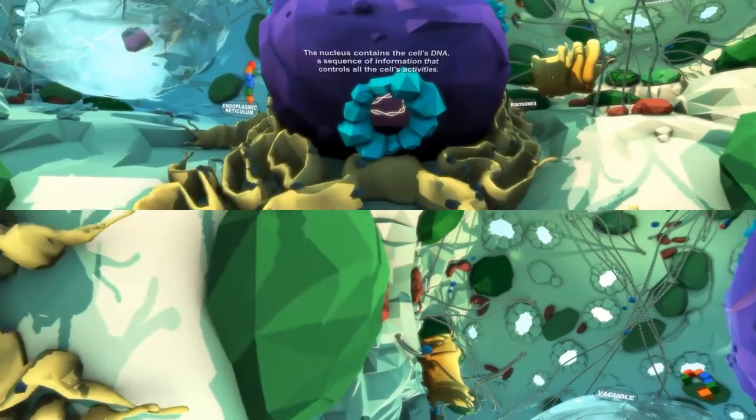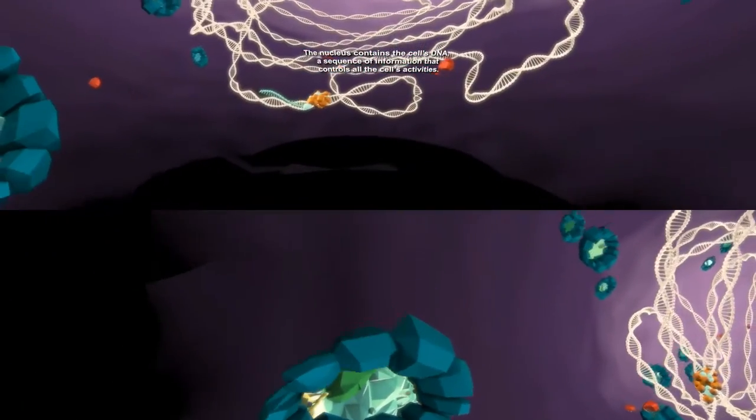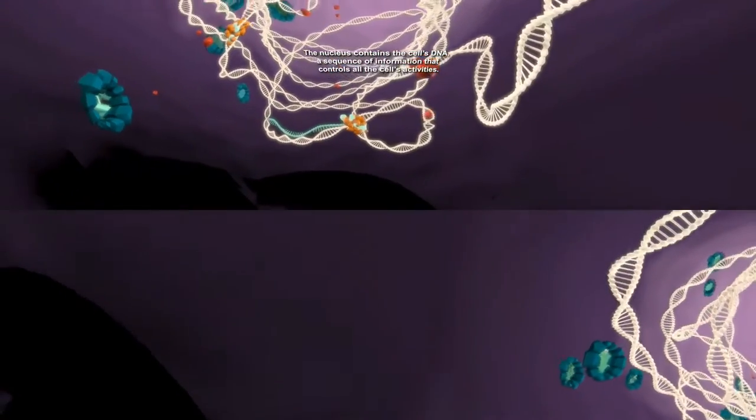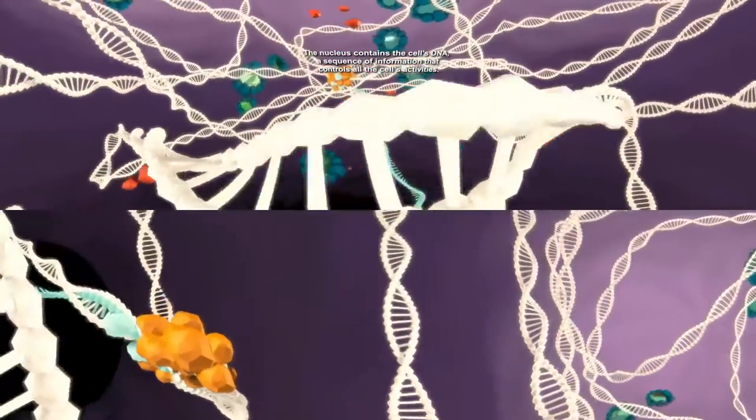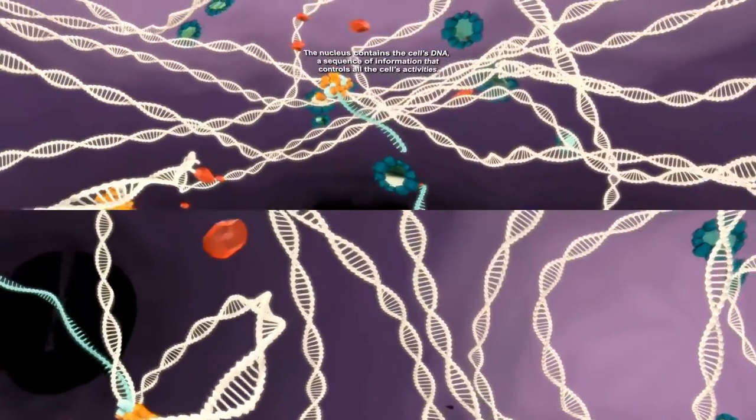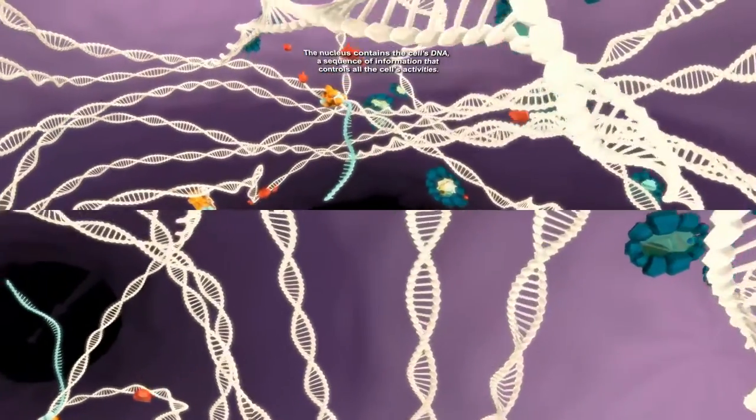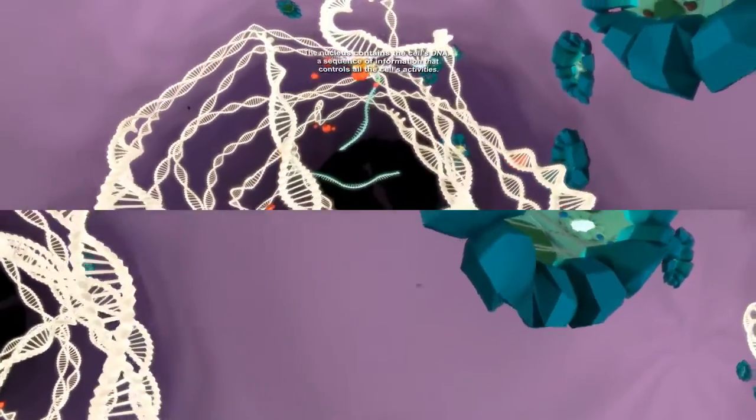You are heading through a nuclear pore and into the plant cell nucleus. The nucleus is home to the cell's DNA, a long, string-like molecule. The DNA contains a sequence of information that controls all of the cell's activities.